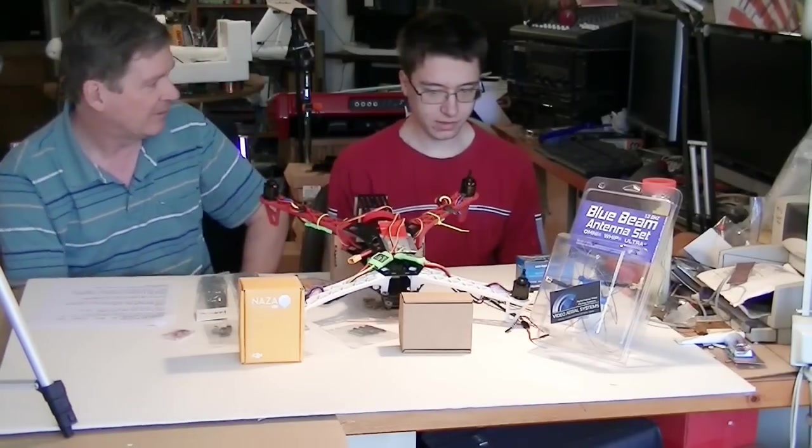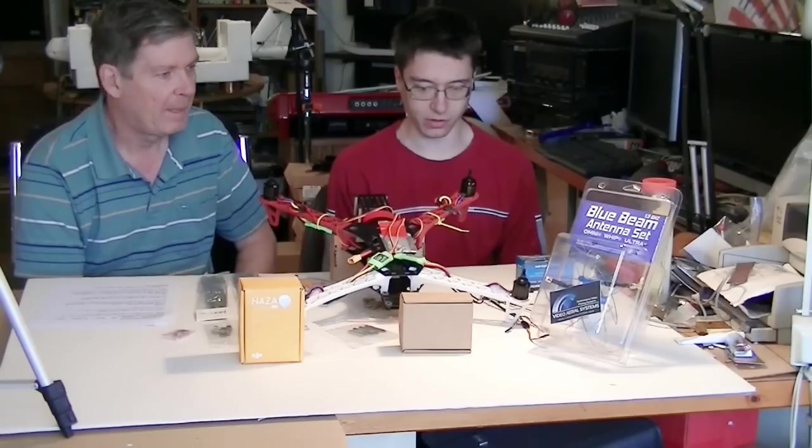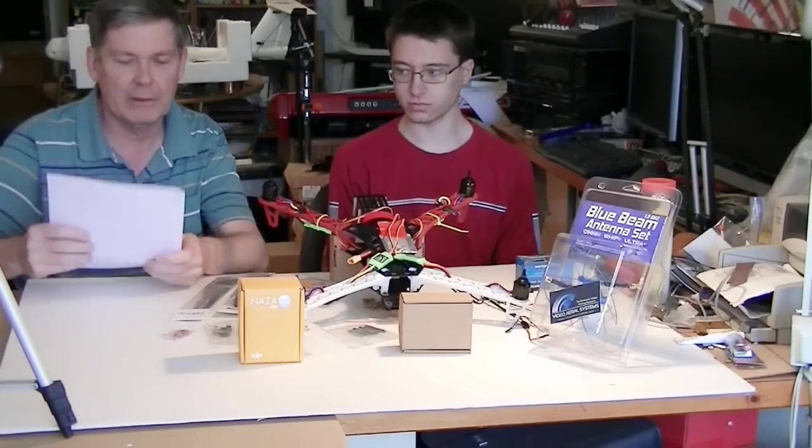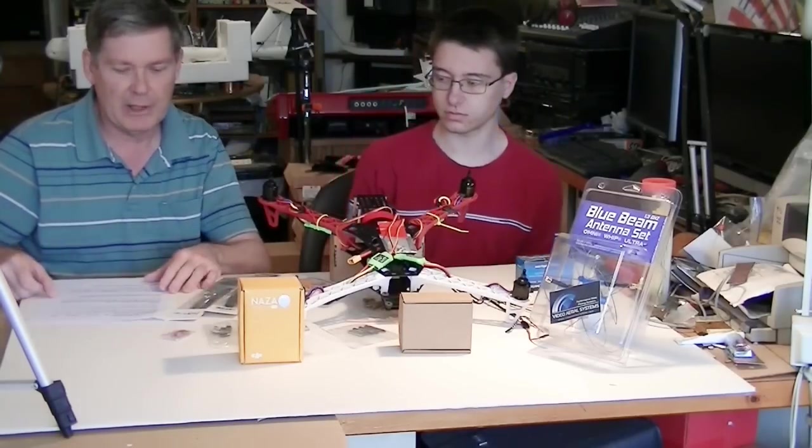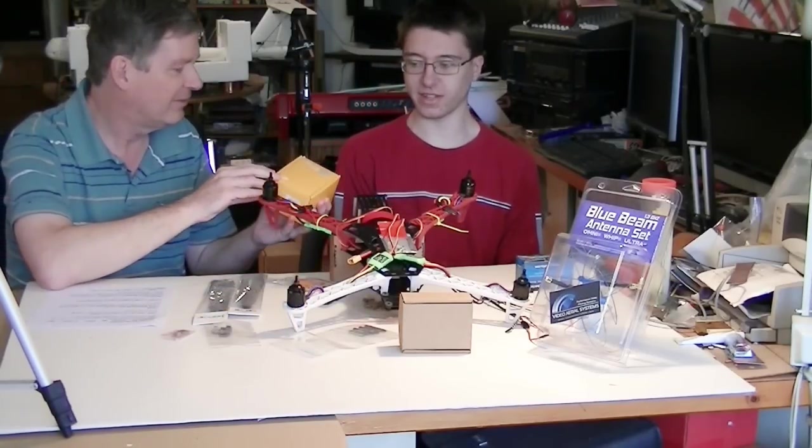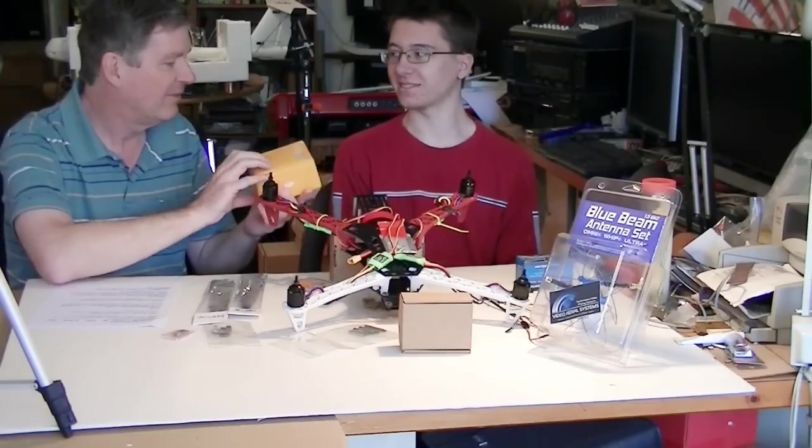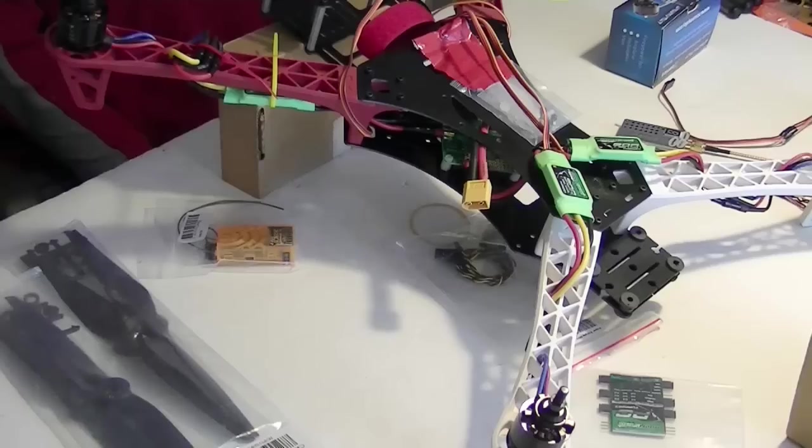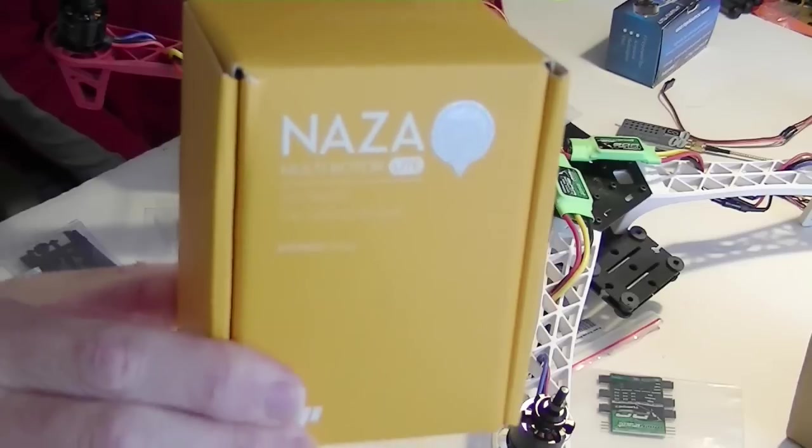John has put the frame together and put the motors on and the ESCs and the distribution board. So here we go. What should we talk about first, John? Well, let's see. Let's talk about the frames. So we did the frame. So let's talk about this. What is this? It's the NAZA M-Lite. The DJI NAZA M-Lite. We'll just hold the box up there.